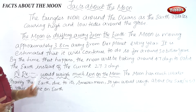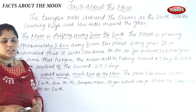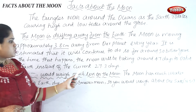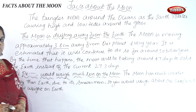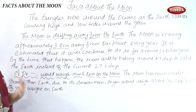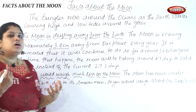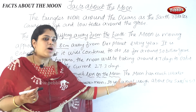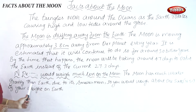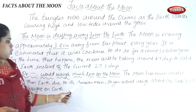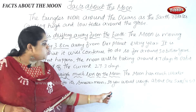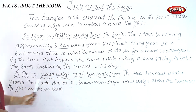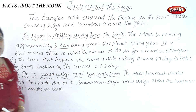The next point is: a person would weigh much less on the moon. The moon has much weaker gravity than earth due to its smaller mass. You would weigh about 16.5% of your weight on the earth.